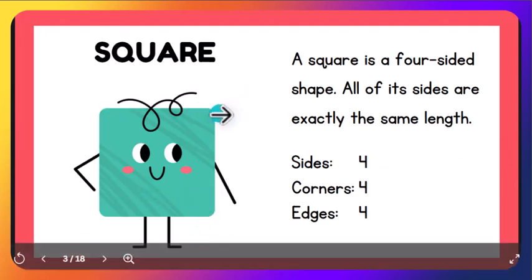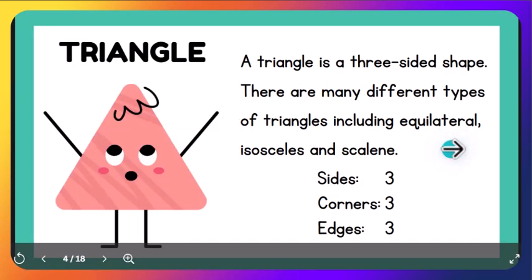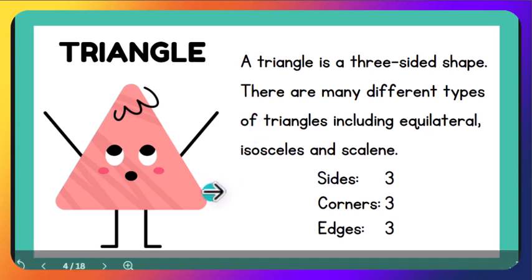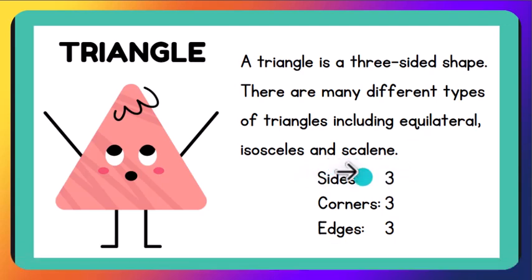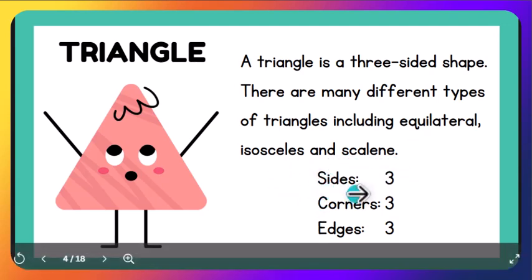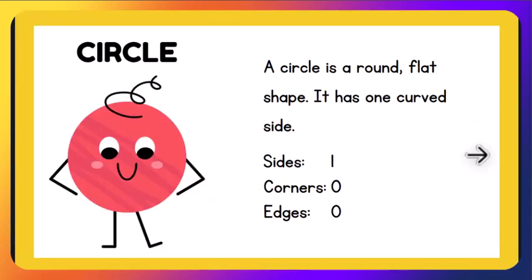Triangle. A triangle has three sides. There are many different types of triangles, including equilateral triangle, isosceles triangle, and scalene triangle. A triangle always has three sides. It has three corners and three edges.